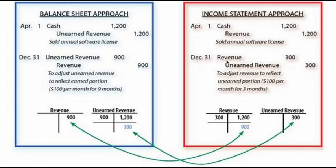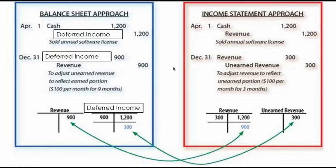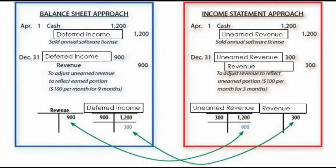Because there was confusion between the two approaches both using 'unearned revenue,' the terminology was updated. For the balance sheet approach, instead of unearned revenue, we now use deferred income — so the entry is: debit cash, credit deferred income. The adjusting entry reverses this: debit deferred income, credit revenue. For the income statement approach, the original entry remains: debit cash, credit unearned revenue. The adjusting entry is: debit unearned revenue, credit revenue. Now the two approaches are clearly distinguished by their account names.